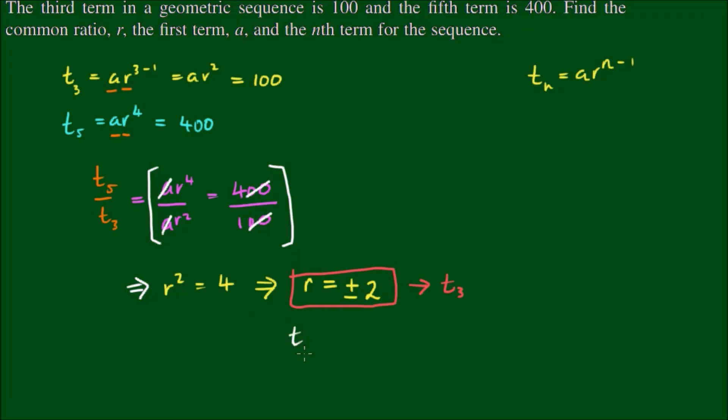We've got t3 equals a times r, which is plus or minus 2, squared equals 100. So that implies that a, if we do the calculation, plus or minus 2 squared is always a positive and that comes out to equal 4. We've got a times 4 equals 100.